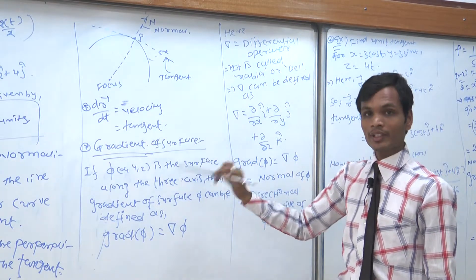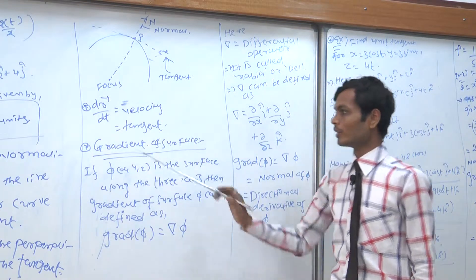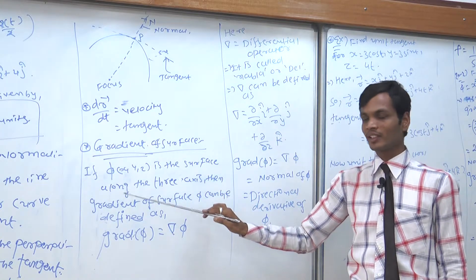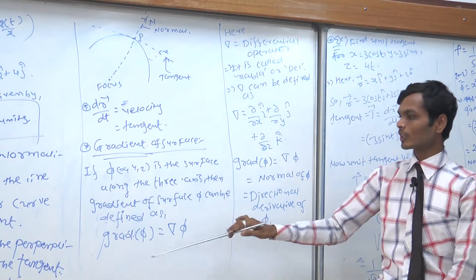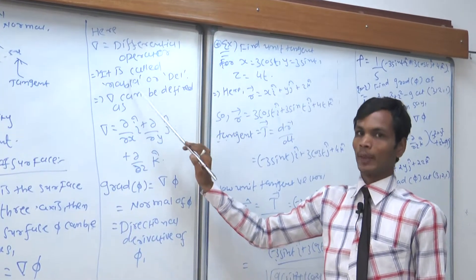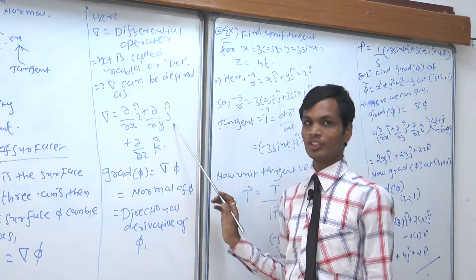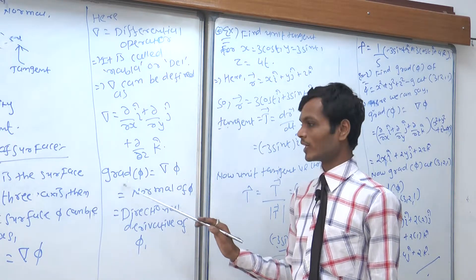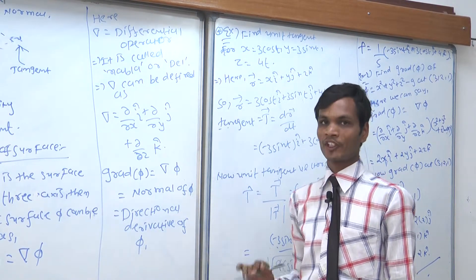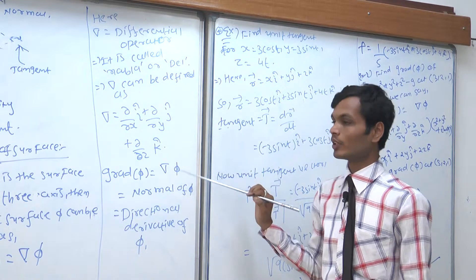dr/dt equals velocity, which is also equal to our tangent. If we want to find the tangent of a vector, we compute dr/dt. The gradient of a surface φ is a function of x, y, and z. The gradient of φ is defined as ∇φ, where ∇ (nabla or del) is the differential operator: ∇ = (∂/∂x)i + (∂/∂y)j + (∂/∂z)k. The gradient ∇φ equals the normal and is also the directional derivative of the surface φ.